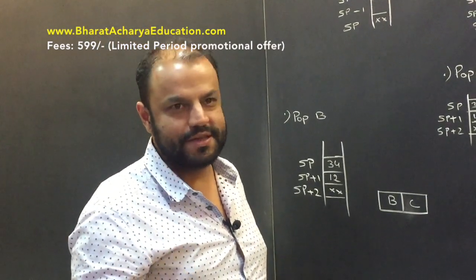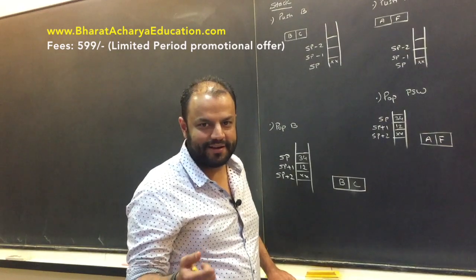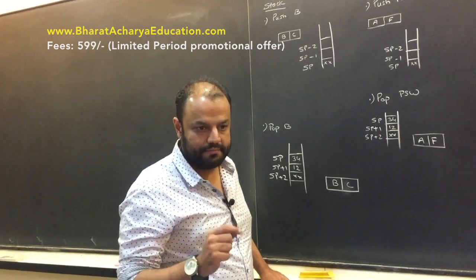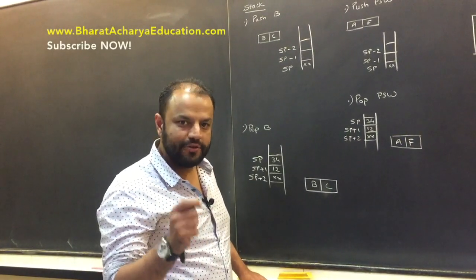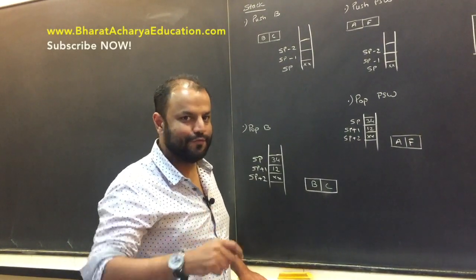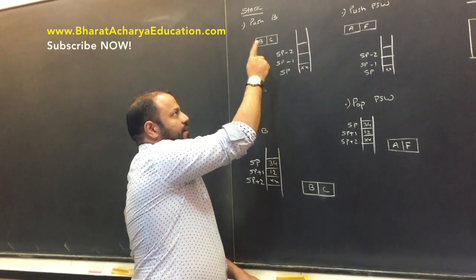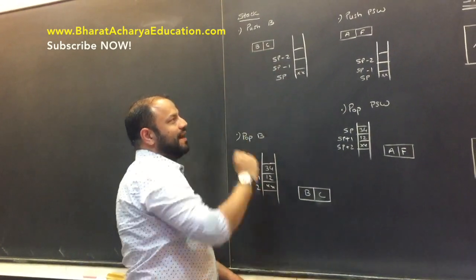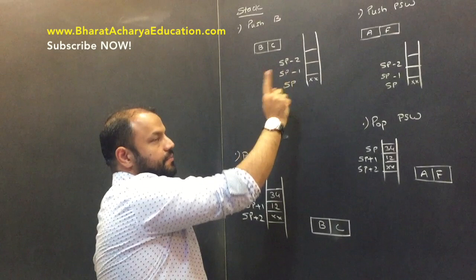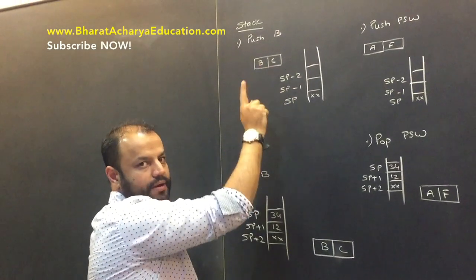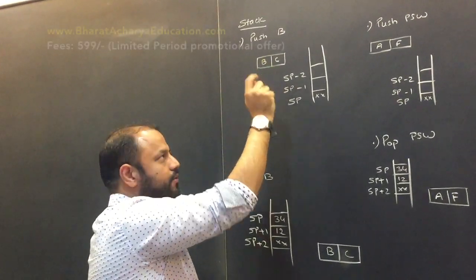In BC pair, B is the higher byte and C is the lower byte. The rule is: lower byte goes to lower address, higher byte goes to higher address. SP-2 is the smaller number. So C, the lower byte, goes to SP-2 (lower address), and B, the higher byte, goes to SP-1 (higher address).